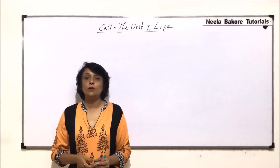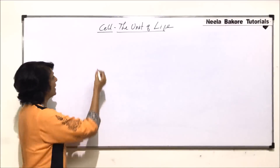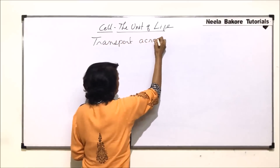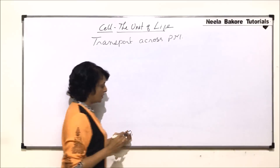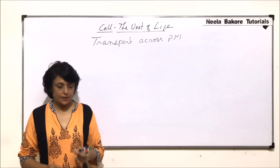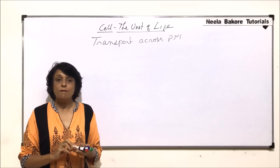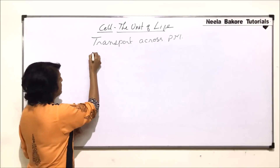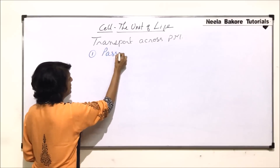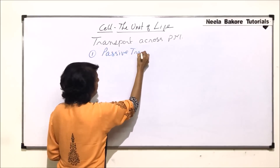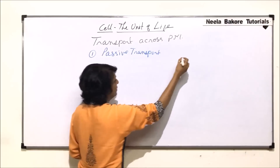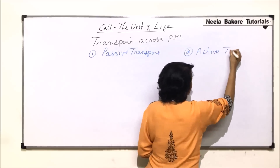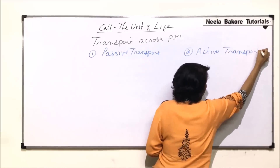In this part we will talk about transport across the plasma membrane. We already know that the plasma membrane is selectively permeable or semi-permeable. There are two main modes through which transport takes place: the first is passive transport, and the second is active transport, which involves expenditure of energy.